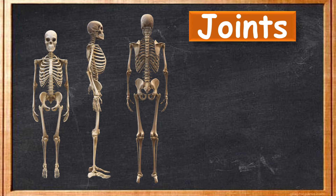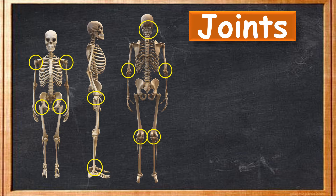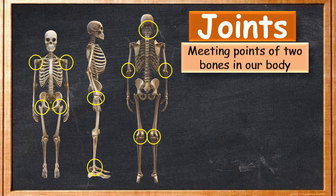When we are talking about the skeleton and joints, that means we are talking about the place where two bones meet in our body. Here you can see the parts marked with yellow circles — these are the major points in our body where two bones meet. We call it joints. In the skeleton, where two bones meet together, that point is called a joint.